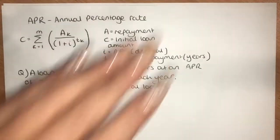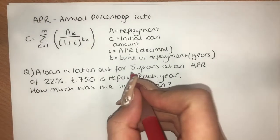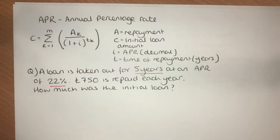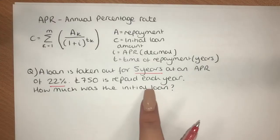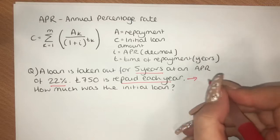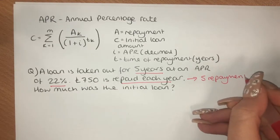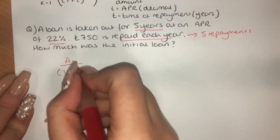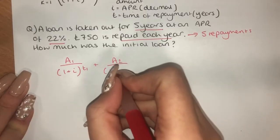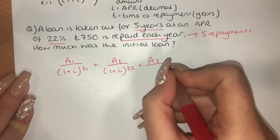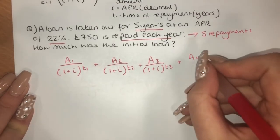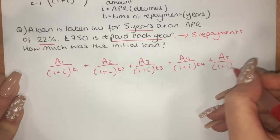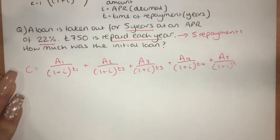So this first question: a loan is taken out for five years at an APR of 22%. £750 is repaid each year. How much was the initial loan? So the repayments each year and it was taken out for five years, so we know there are five repayments. So I'm going to need five parts of these fractions: A1 over (1+i)^T1 plus A2 over (1+i)^T2 plus A3 over (1+i)^T3 plus A4 over (1+i)^T4 plus A5 over (1+i)^T5, and that is all equal to the cost of the loan.